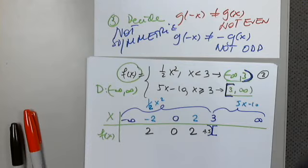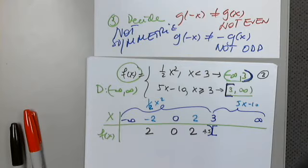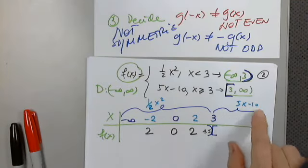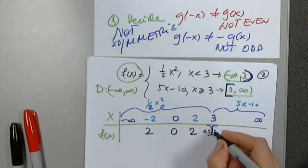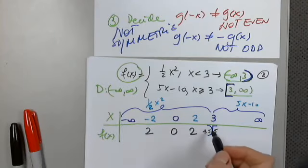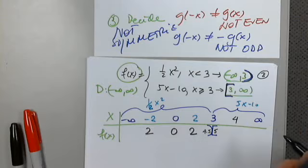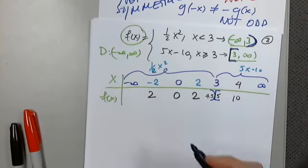Why does (3, 4.5) go inside the parenthesis? Because it will be an open point — the bracket is included and the parenthesis is not. What type of point will (3, 5) be? It's a closed point because it's inside the bracket, which is included. Then I'm using x = 4, which gives 5(4) minus 10 = 10. That's all we need.